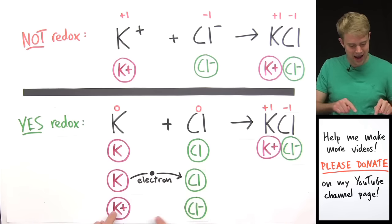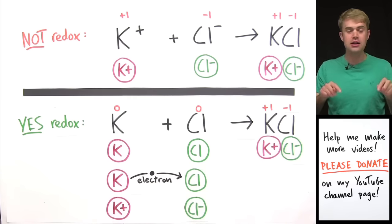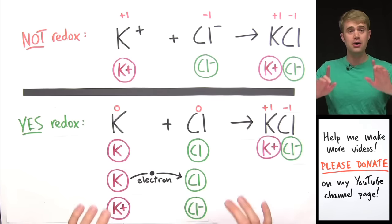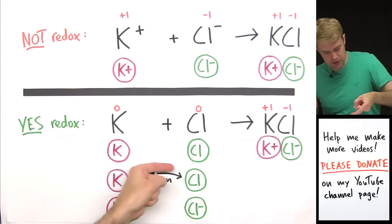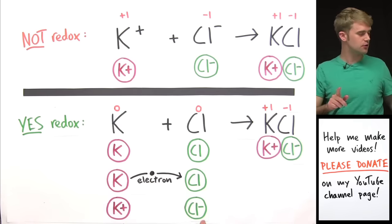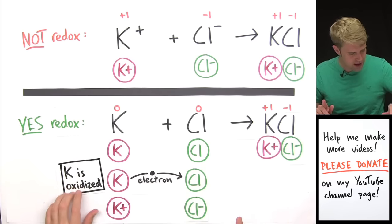Cl gains one of these electrons and becomes Cl-, chloride. So now these two atoms end up with charges but only because of a transfer of electrons. That transfer of electrons caused potassium, K, to become oxidized